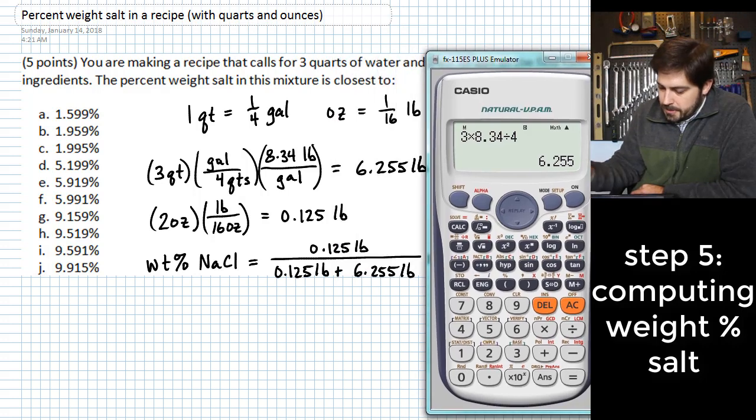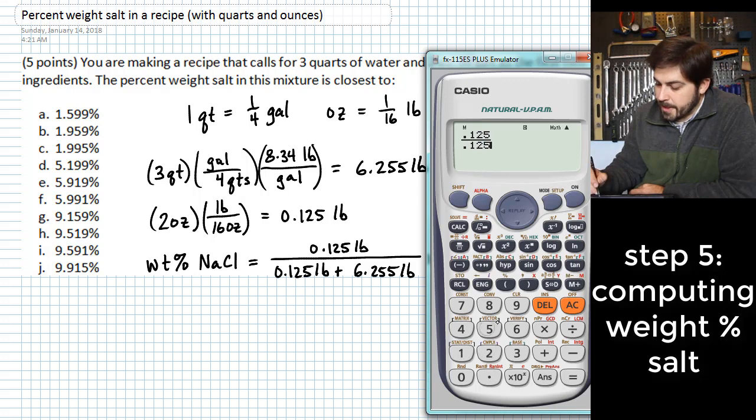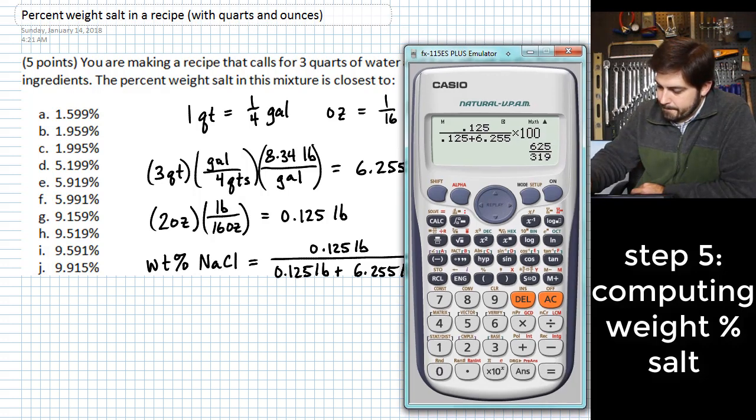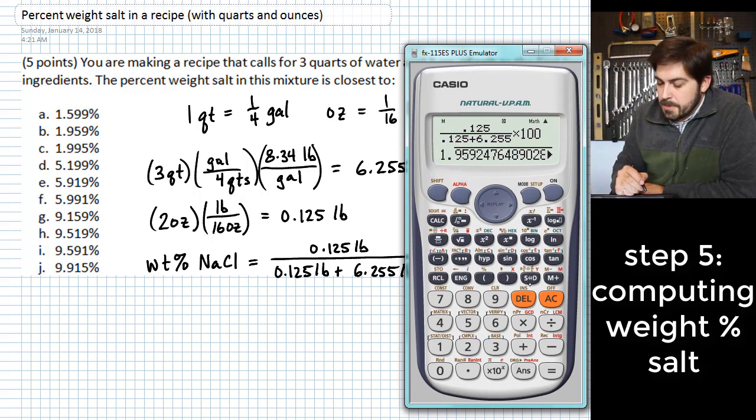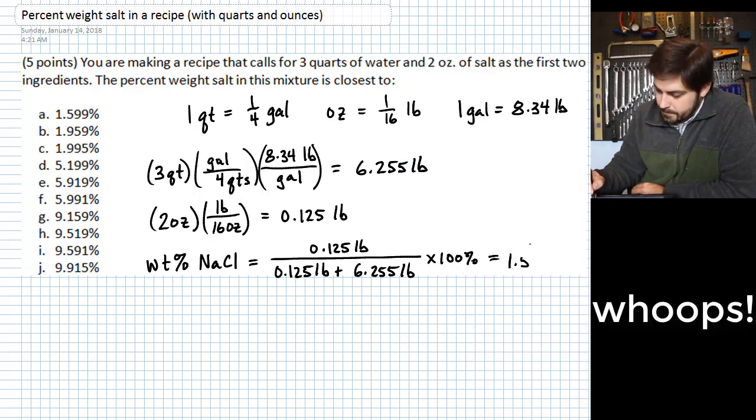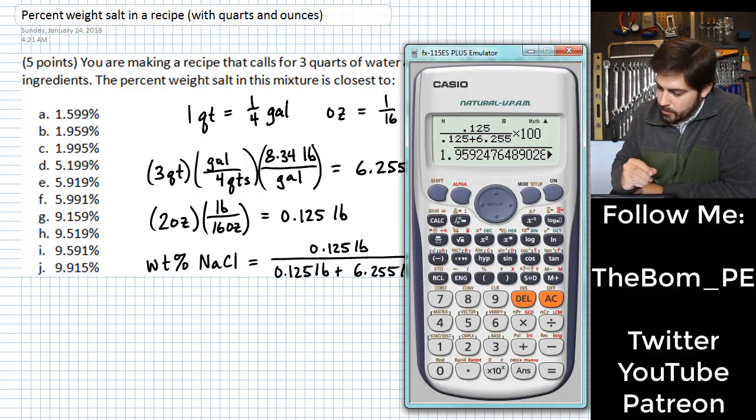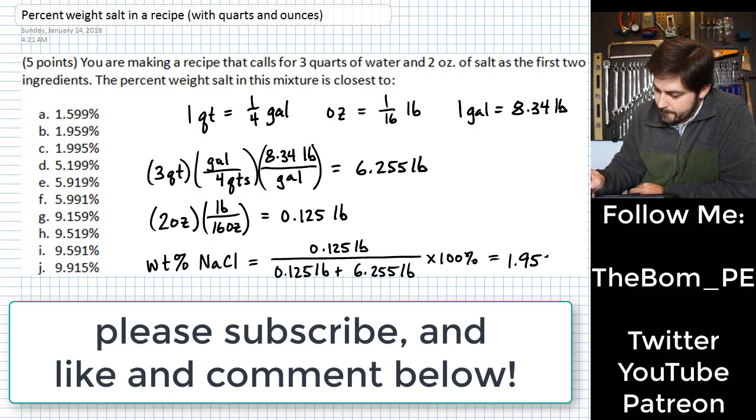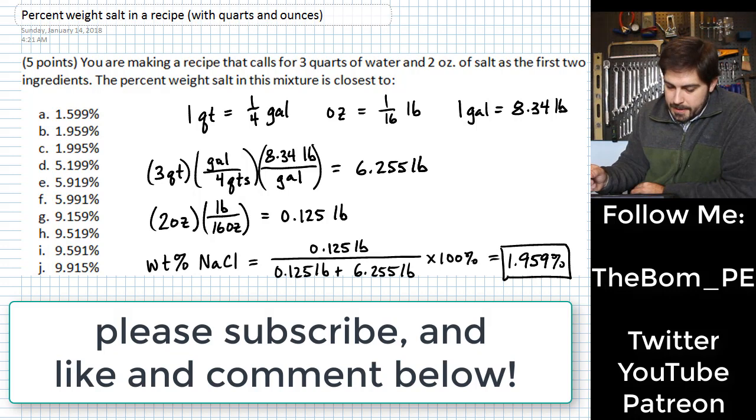Okay, so what we'll do here is we will take a fraction where we put 0.125 in the numerator. And in the denominator we'll do 0.125 plus 6.255. And all of that we'll multiply by 100, which gives me 1.959 percent. And so that means we would choose answer B.